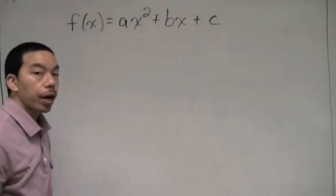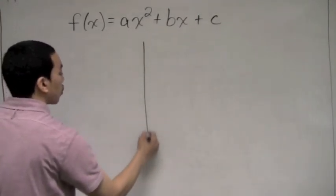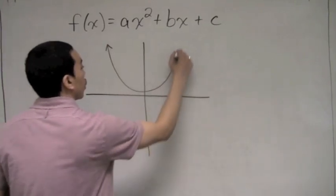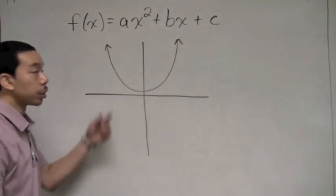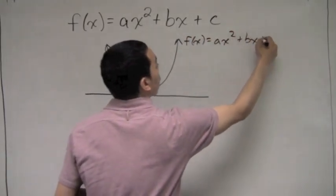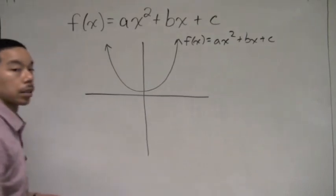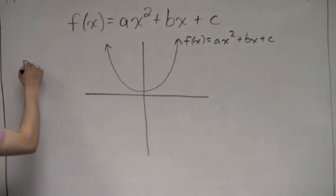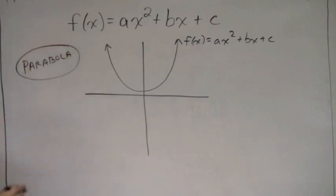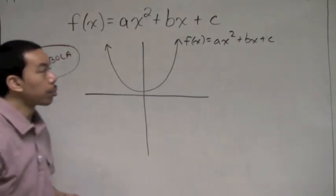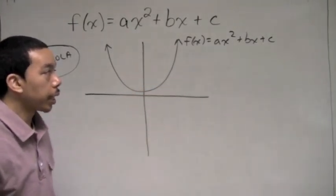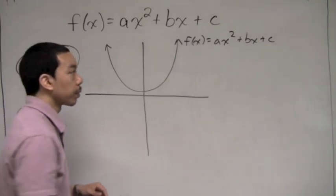Now let me show you the graph of a quadratic function. The graph of f of x equals ax squared plus bx plus c will look like this — it's what's known as a parabola. There's also an alternative form where f of x equals negative ax squared plus bx plus c.